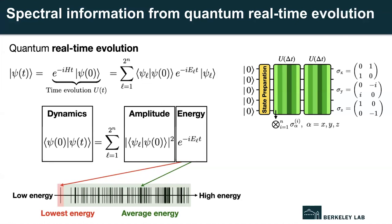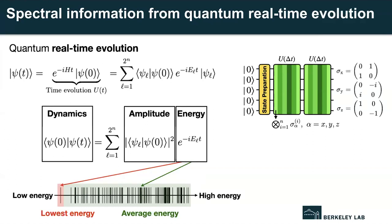It turns out for many physically interesting systems, U(T) can be implemented on a quantum computer efficiently through a discretized scheme layer by layer, which is shown on the right figure. The key quantity we measure on a quantum computer is this time-dependent overlap, which is boxed on the left-hand side in the middle. This is computed by taking the overlap of some initial wave function in its time-evolved version. And why do we care about this overlap?